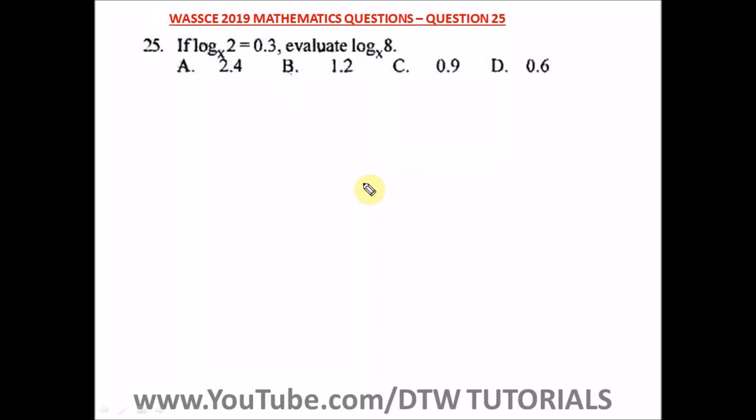Question 25 of the WASSCE 2019 mathematics past question. It says if log 2 base x is equal to 0.3, evaluate log 8 base x. It is quite simple. We have to evaluate log 8 base x.